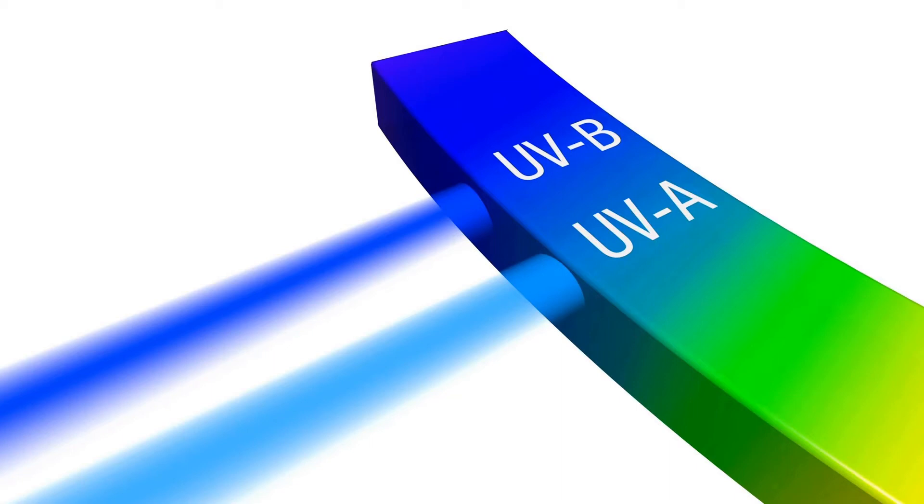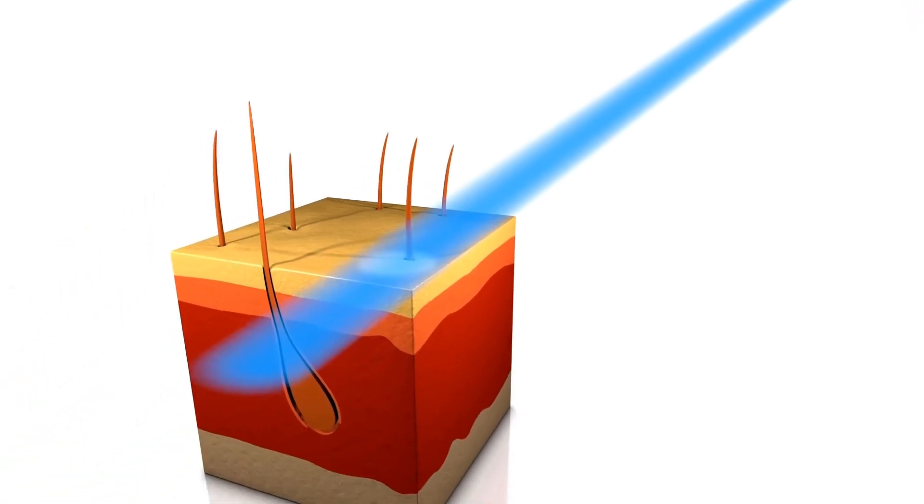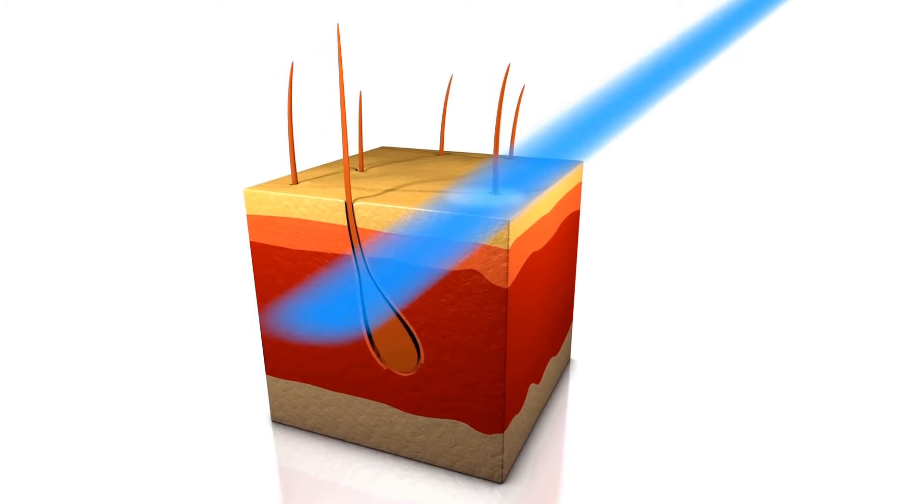UVA rays have a wavelength of 315 to 380 nanometers and penetrate to the dermis or lower skin layer. Here they impact inflammatory cells and specific connective tissue cells.